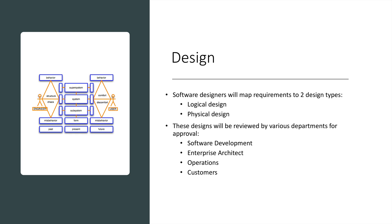The next step is the design phase. In this phase, software designers will map the detailed requirements into two major design types. The first is a logical design — how the general components will fit together and what is the overall hierarchy of that design. The next type is a physical design, which includes detailed things such as database schemas that lay out individual fields and tables in the database and their relationships. These designs will be reviewed by various departments, including software development management, an enterprise architect, operations personnel to make sure they can operate and support the software effectively, and also the customer.